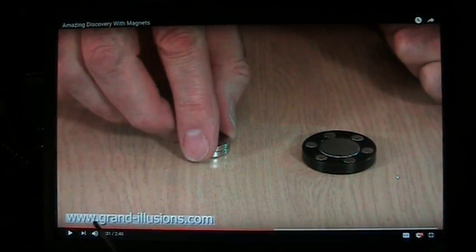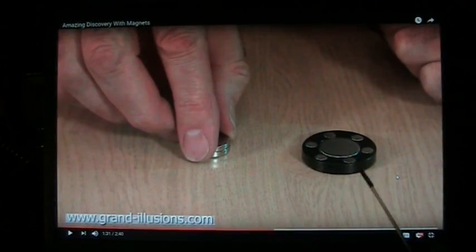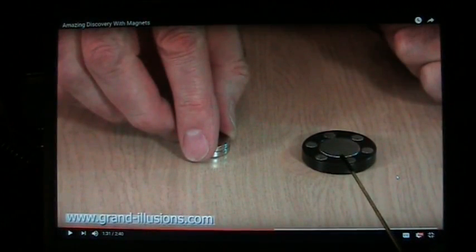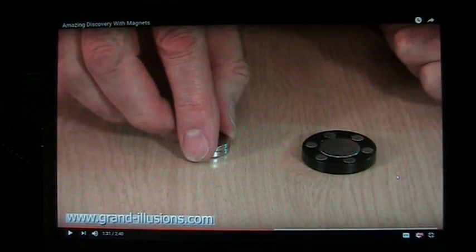This is from www.grand-illusions.com and he's going to show this particular plastic ring with a set of magnets and a big magnet in the center which creates what I believe is the quantum effect. I'm going to show it and then I'll tell you about it.